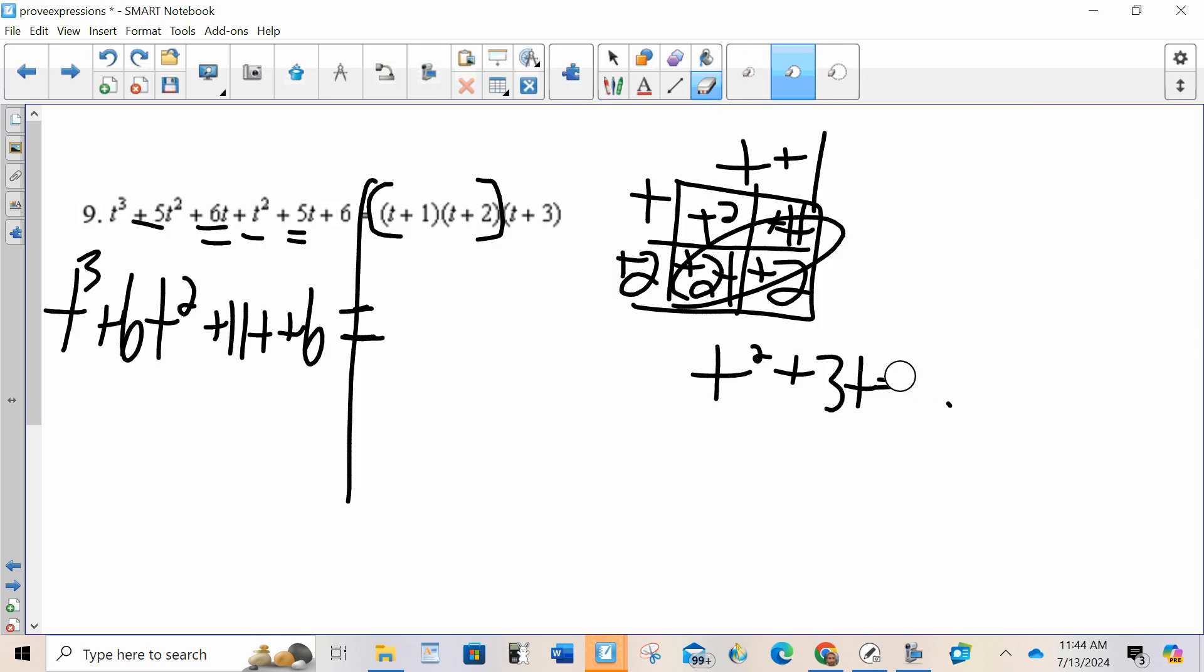t squared plus 3t plus 2. So now I have t squared plus 3t plus 2 times t plus 3. Let's just get rid of this.